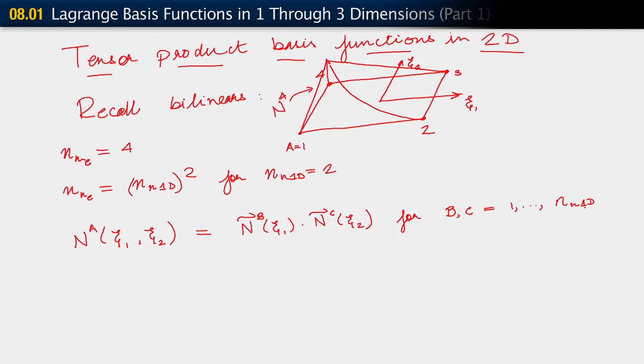What we are going to do is observe that we always have some N_A of C1, C2, a function of C1 and C2, that is going to be written as a product of N tilde B of C1 times N tilde C of C2, for B, C equals 1 up to number of nodes in 1D. And A, which is on the left-hand side, equals 1, 2, up to number of nodes in the element in 2D. It's really as simple as that. We're taking those basis functions we developed on the previous slide, labeled N tilde, in each dimension along each of the dimensions, the C1 and C2 dimensions, and simply forming a product for them. This sort of product is what we mean by the tensor product formula.